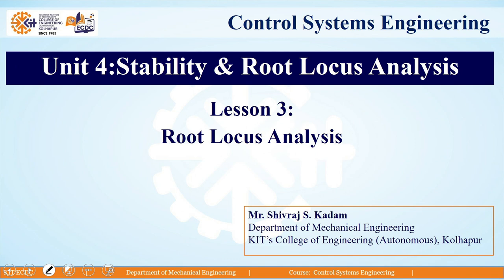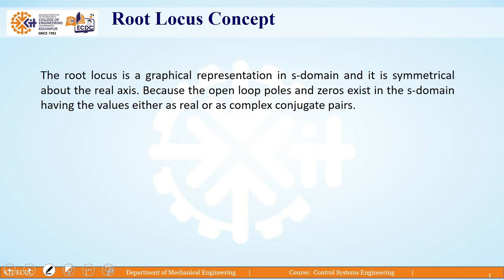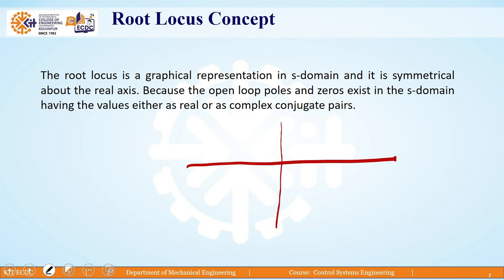Moving ahead, the root locus is a graphical representation on an S-plane. Generally it is a symmetrical representation on a graph paper about the real axis. The S-plane has two axes: the horizontal axis is the real axis given in terms of sigma, and the vertical axis is given in terms of jω, that is the imaginary axis. Things will be represented over the S-plane in the form of poles and zeros of a system.